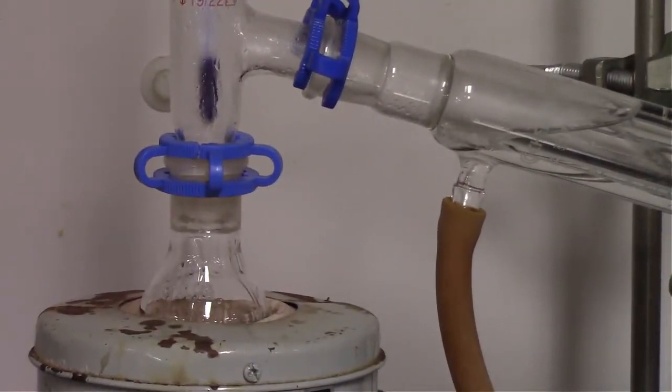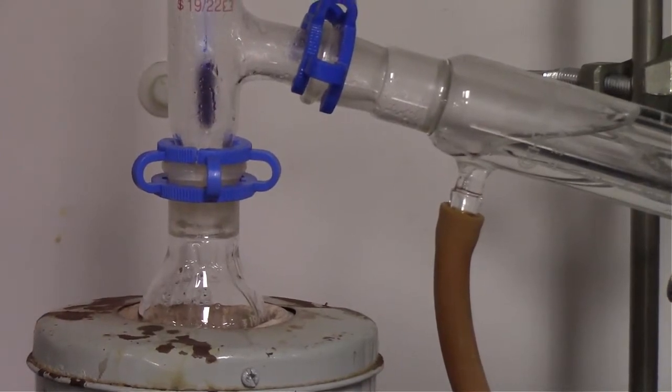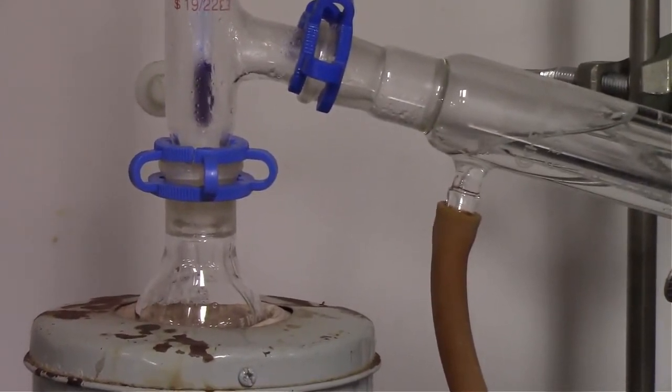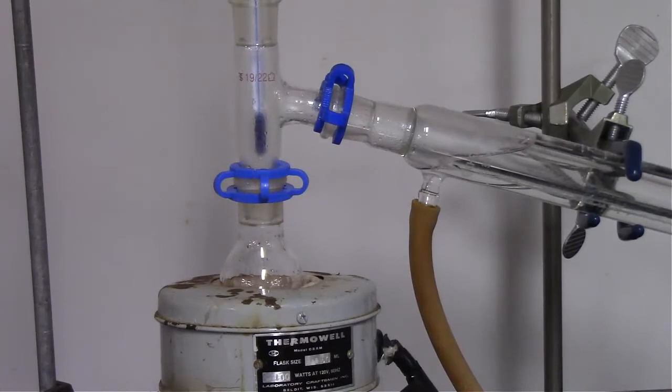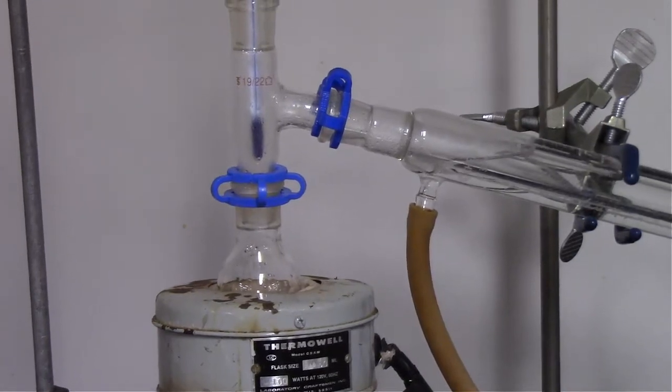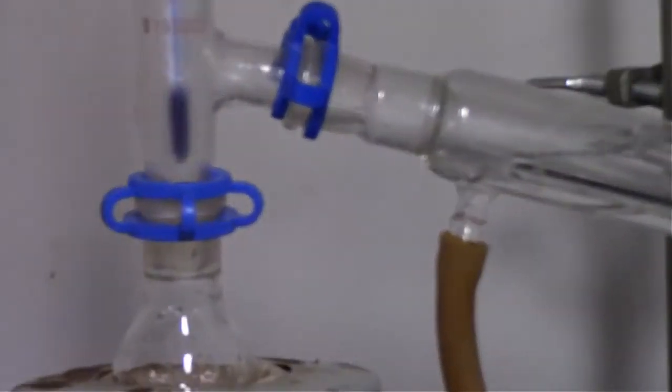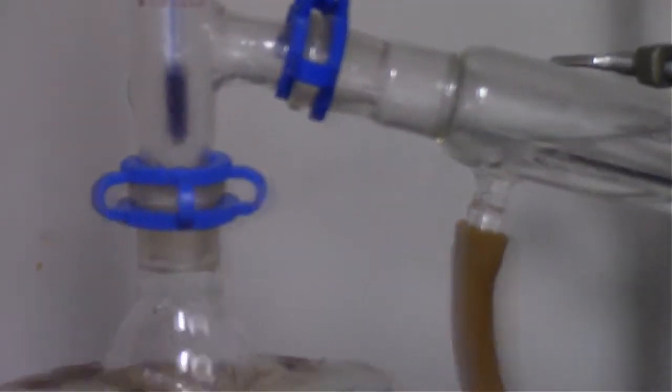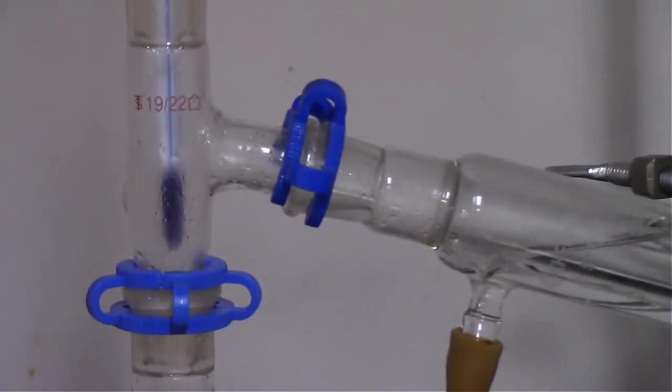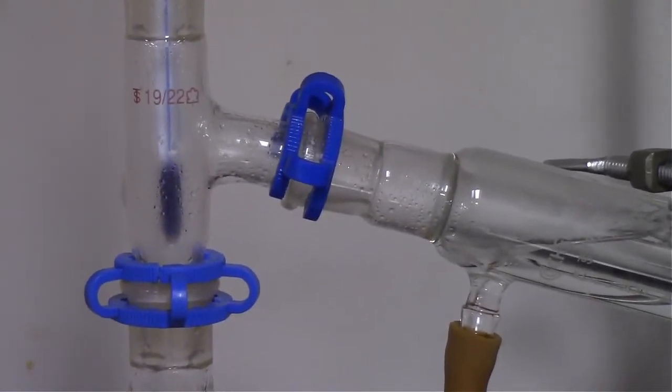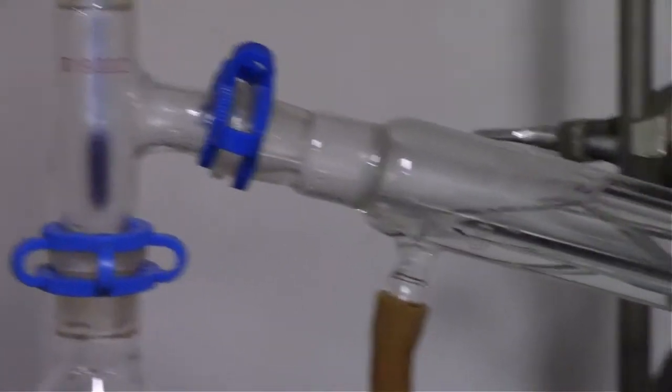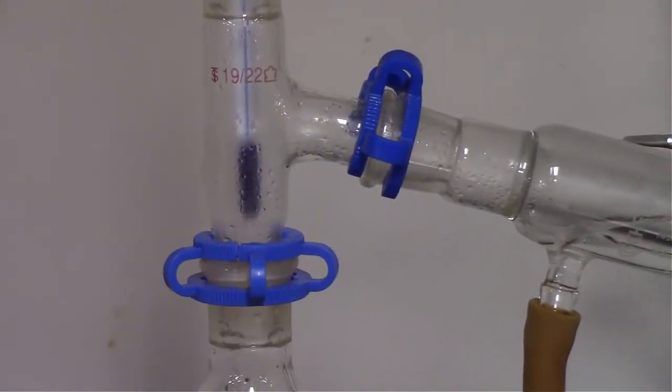And now it's starting to distill. So now we can see that our cyclohexene, which has a lower boiling point than cyclohexanol, is up into our three-way adapter and it is being condensed within our condenser and that liquid is falling down and is about to be collected in our collection flask, which is actually just a small test tube.